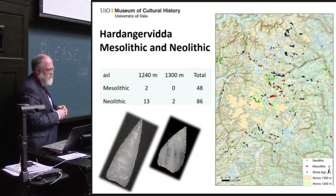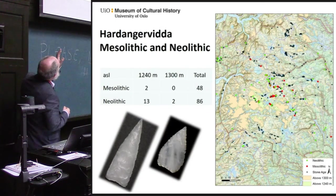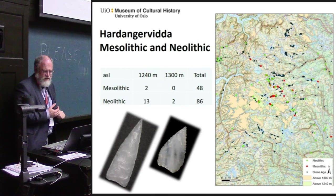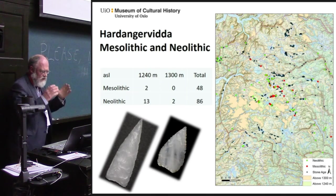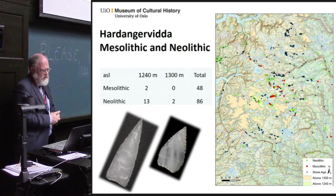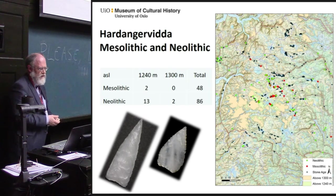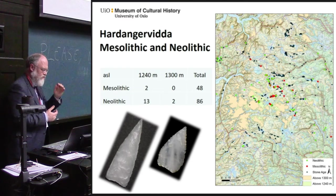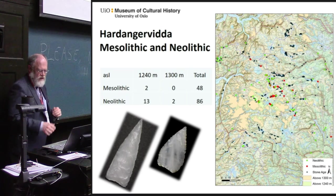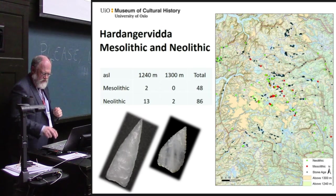And when you look at Hardangervidda, an area in mid-south Norway, you will also see that most of the sites are below these old tree lines. The Mesolithic sites — only a couple — are above 1,240 meters, and also the Neolithic sites: you find very few at such high levels that they were, in fact, above the tree limit.